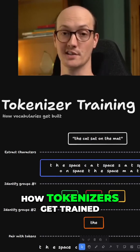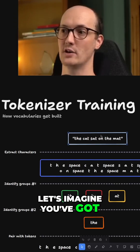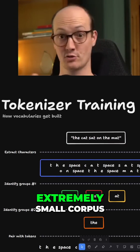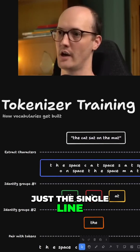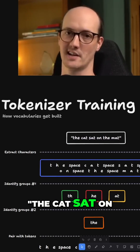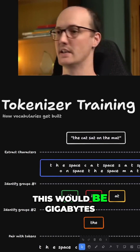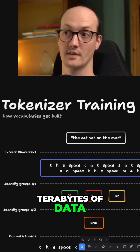Here's the process for how tokenizers get trained. Let's imagine you've got a corpus of text. We're going to use an extremely small corpus — just the single line, 'the cat sat on the mat.' But in reality, this would be gigabytes, terabytes of data.